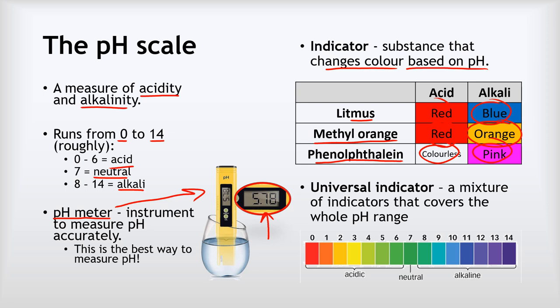There is one indicator where we can sort of measure the pH: universal indicator. This is a mixture of indicators covering the whole pH range — it goes from red at strong acid, through orange-yellow for weak acid, to green when neutral, to blue for weak alkali, and up to dark purple when strongly alkaline. Although this gives a good indication of pH, it doesn't accurately measure it the way a pH meter can.